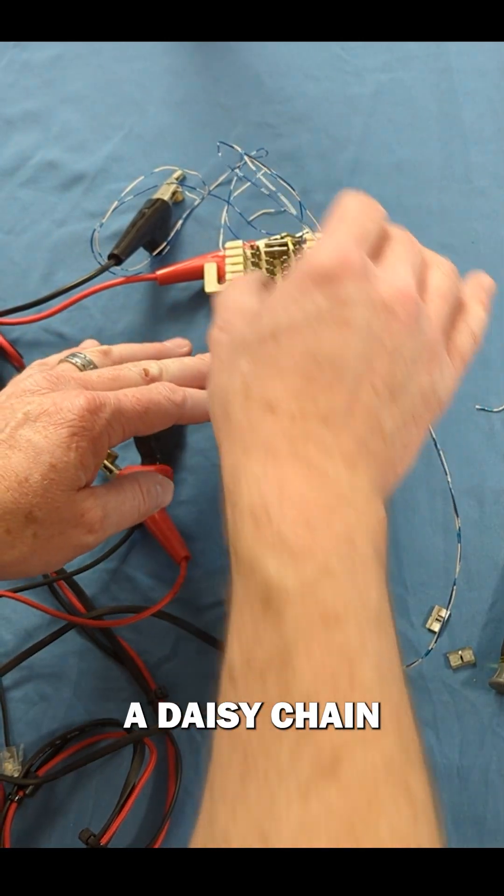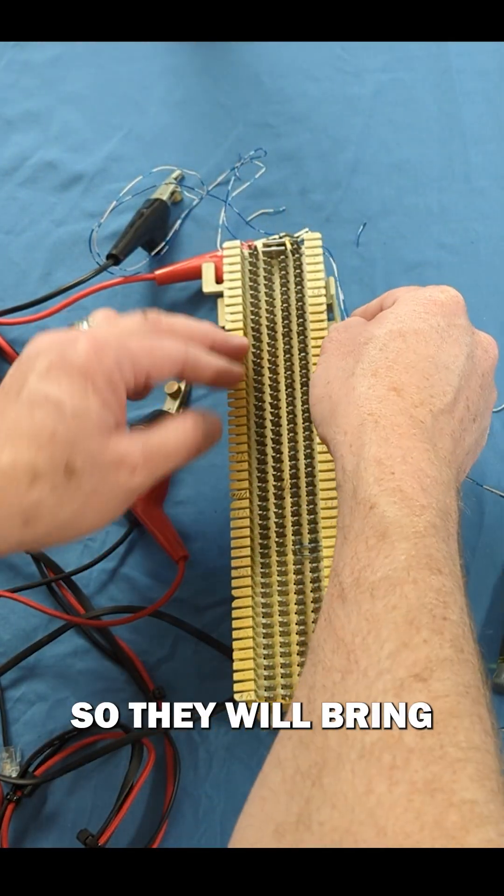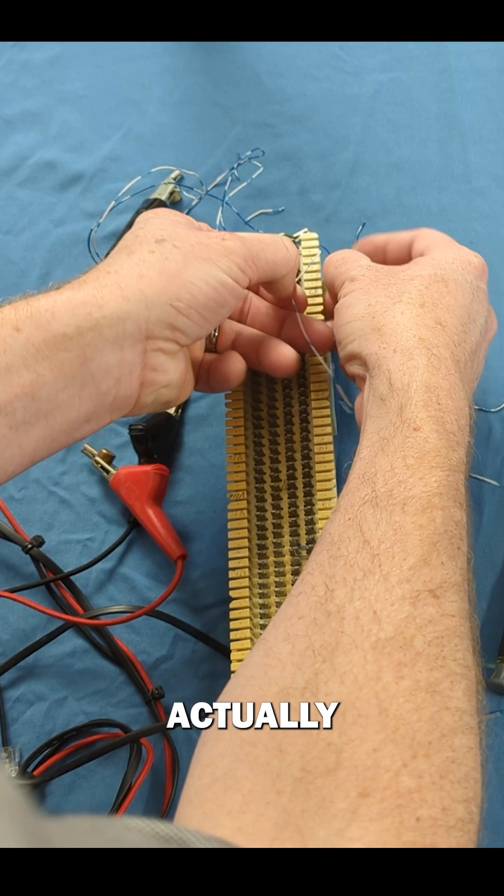You'll see a lot of older phone systems that actually have a daisy chain in place, so they will bring this signal down and they will actually wrap it back.